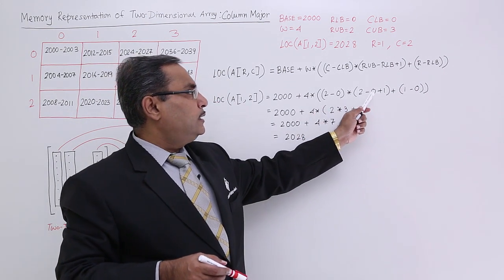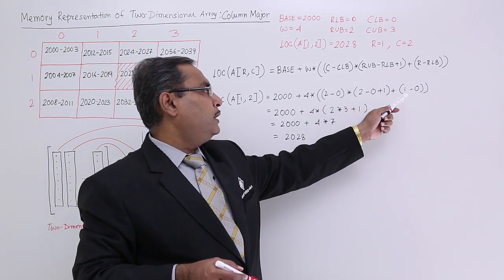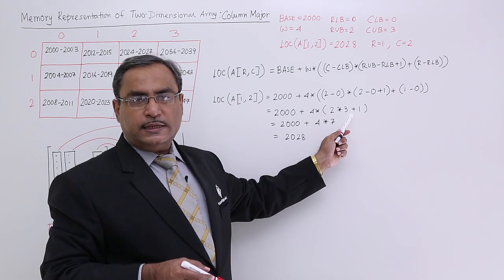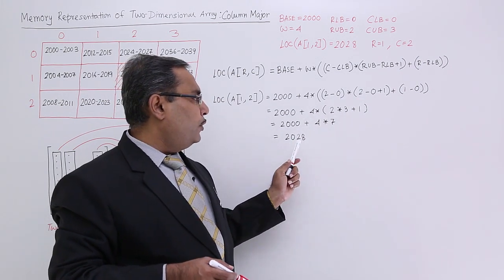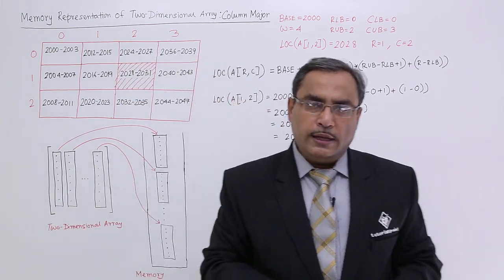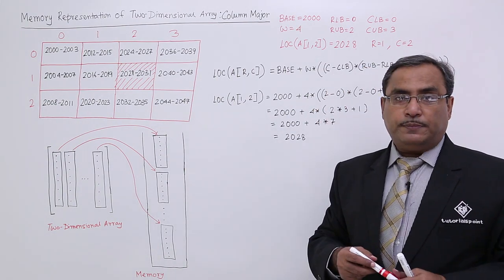So it is nothing but 2. It is nothing but 3. So 2 into 3 plus 1. So 2 into 3 plus 1 means it is 7. 7 into 4, I am going to get 2028. In this way, the things are taking shape.